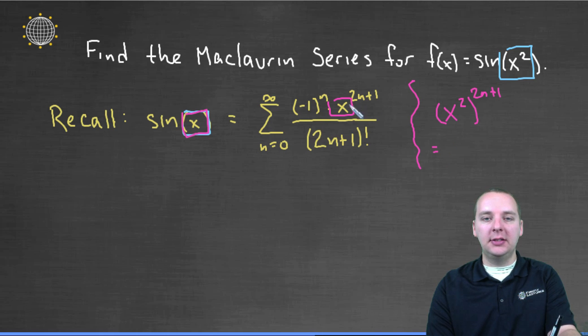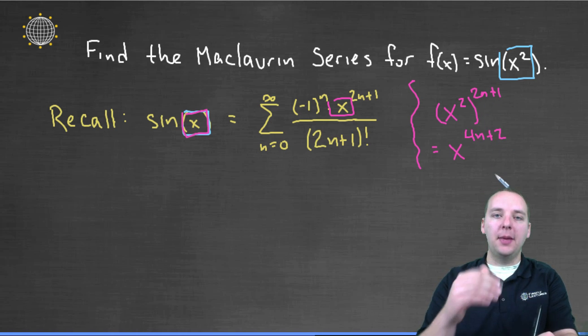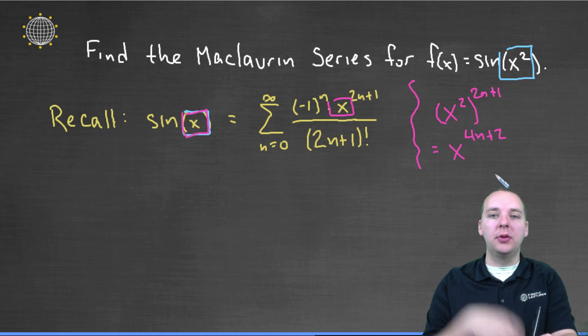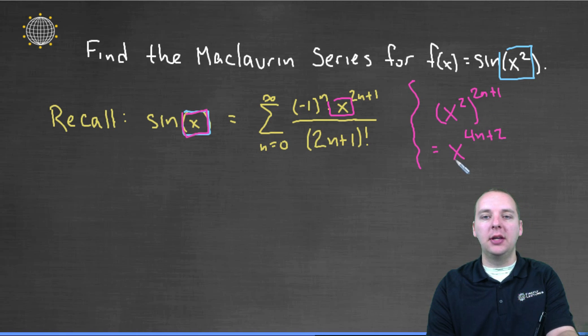that would actually change this expression to x raised to the 2 times (2n+1), or 4n+2. Because if you recall, a power to a power, you multiply the exponents together.